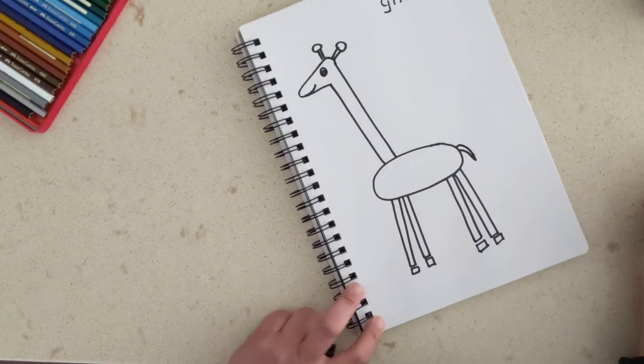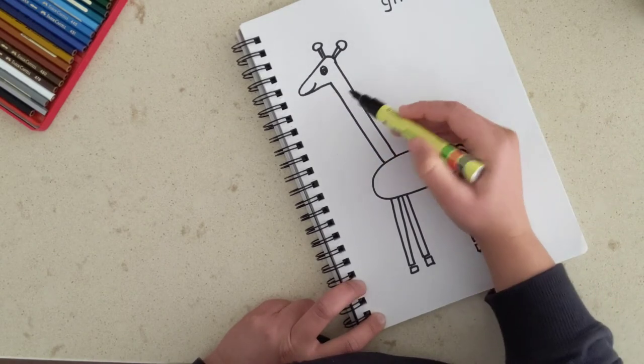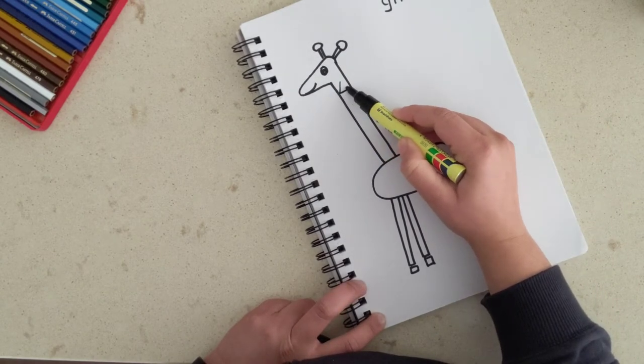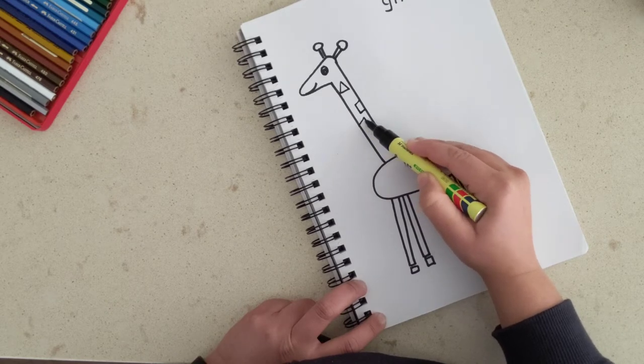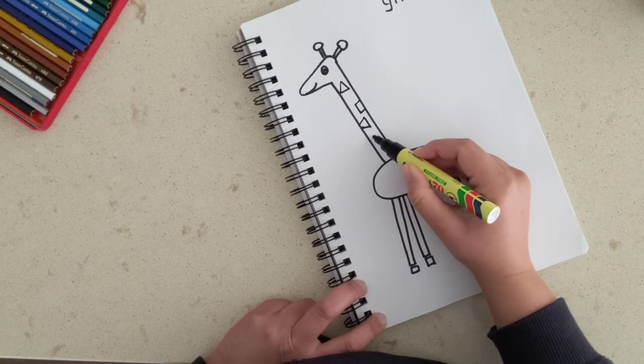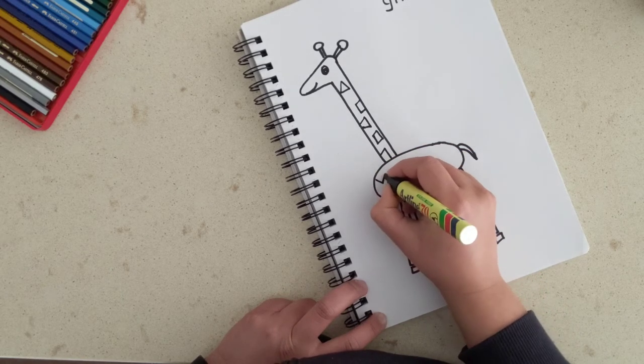Now if you have seen pictures of giraffes, you would have seen they have patches on them. We are going to draw those. I am going to draw little triangles and squares all across the giraffe's body. You can randomly draw it anywhere, it doesn't have to be perfect. These patches can be different for each giraffe.